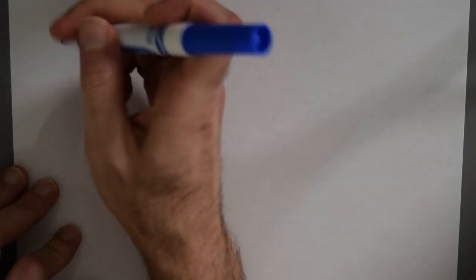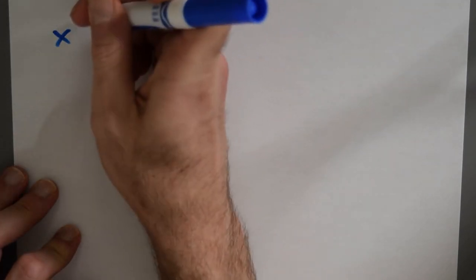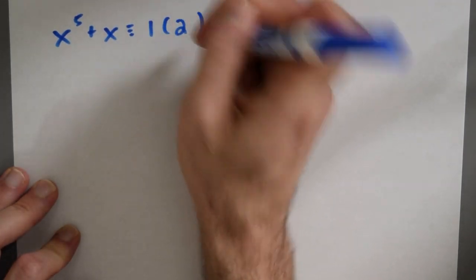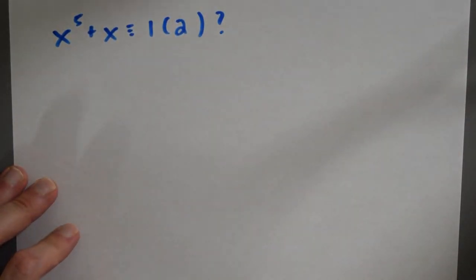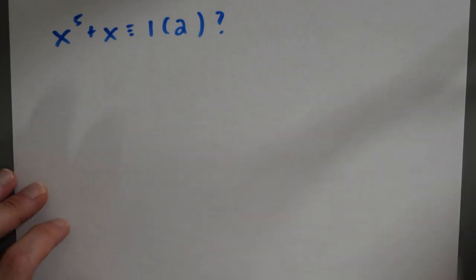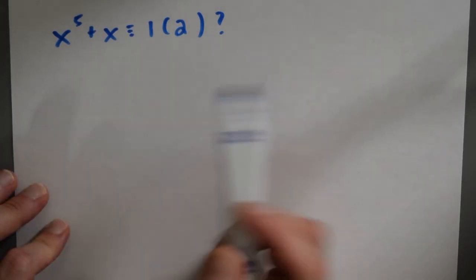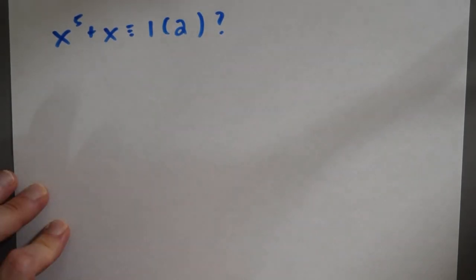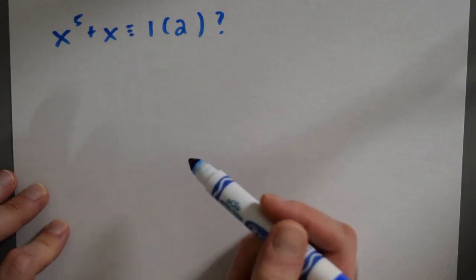So let's specialize to the situation where P is equal to two. So we're trying to find an integer X with the property that X to the fifth plus X is congruent to one modulo two. This would be the statement of the conjecture in the situation where that prime P is two. We're looking for an integer X so that X to the fifth plus X is congruent to one modulo two in this case. Well, this is really a statement about whether or not something's even or odd, right, working modulo two. So it's maybe natural to break this into cases as to whether or not X is even or odd.